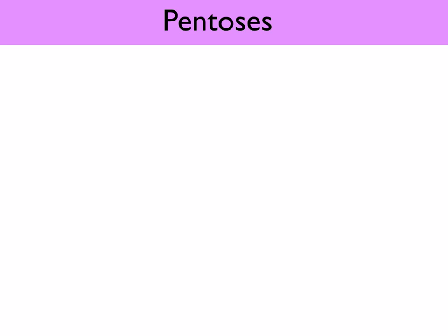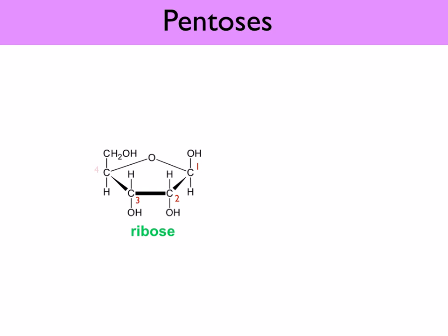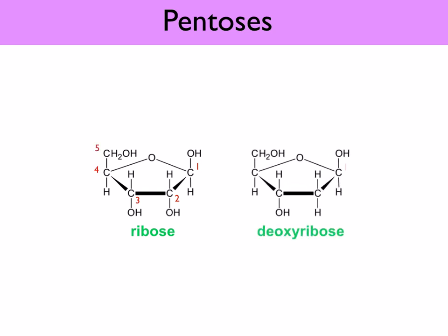Moving on to pentoses: pentose monosaccharides contain five carbon atoms, which is long enough to form a ring. The two important pentose molecules are ribose and deoxyribose. The only difference between them is at carbon 2 — ribose has an OH group at carbon 2, while deoxyribose does not. We'll discuss this in more detail when we get to transcription and translation.